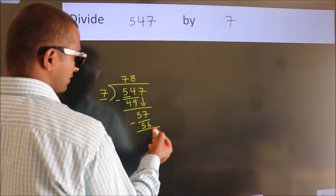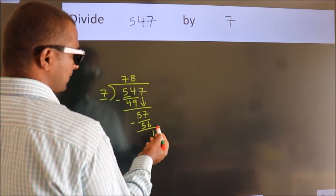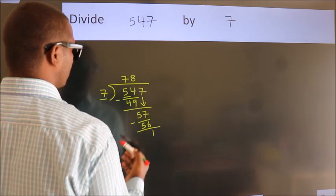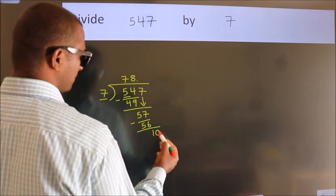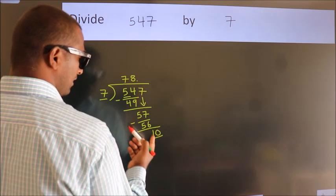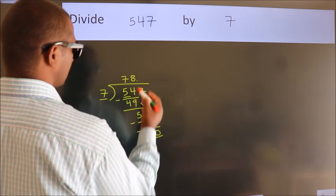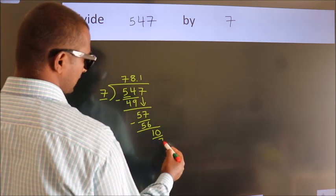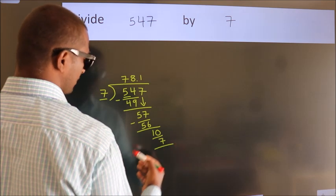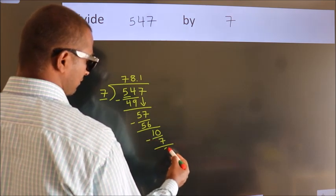After this, no more numbers to bring down. So what we do is, we put a dot and take 0. So 10. A number close to 10 in the 7 table is 7 times 1 is 7. Now we subtract, we get 3.